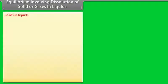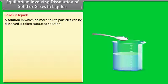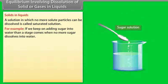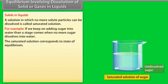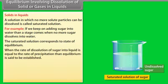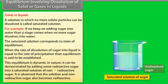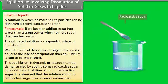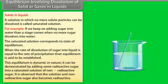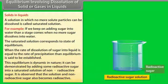Equilibrium Involving Dissolution of Solids in Liquids: A solution in which no more solute particles can be dissolved is called a saturated solution. For example, if we keep adding sugar into water, a stage comes when no more sugar dissolves. The saturated solution corresponds to a state of equilibrium, where the rate of dissolution equals the rate of precipitation. This equilibrium is dynamic in nature, as demonstrated by adding radioactive sugar to a saturated solution of non-radioactive sugar — the solution and non-radioactive sugar also become radioactive.